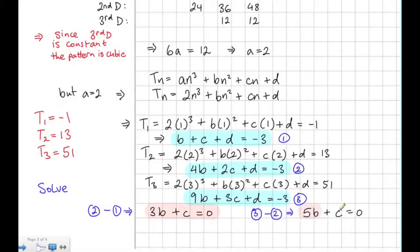So this gives us two more equations, this time just in b and c. So we should be able to solve these quick enough. We call these equations 4 and 5. If we subtract 4 from equation 5, this gives us that 2b, the c's cancel out, equals 0. Therefore, b must be equal to 0.